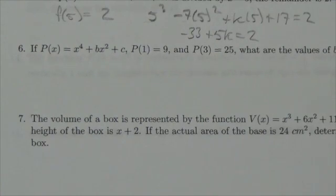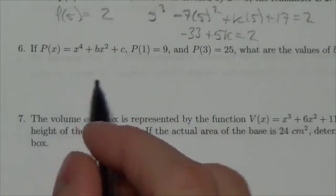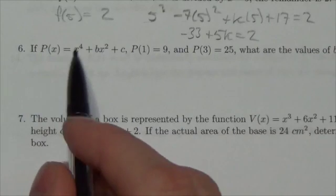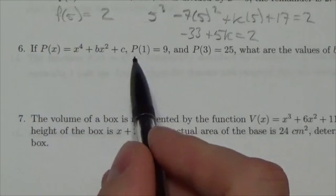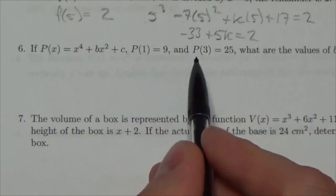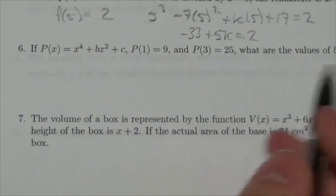Hi, everyone. This is the Math 30-1 Functions Review. This is question 6. It says we have this polynomial function here, x to the 4th plus bx squared plus c. And we know that if you enter in a 1, we get 9. If we enter in a 3, we get 25. And what are the values of b and c?